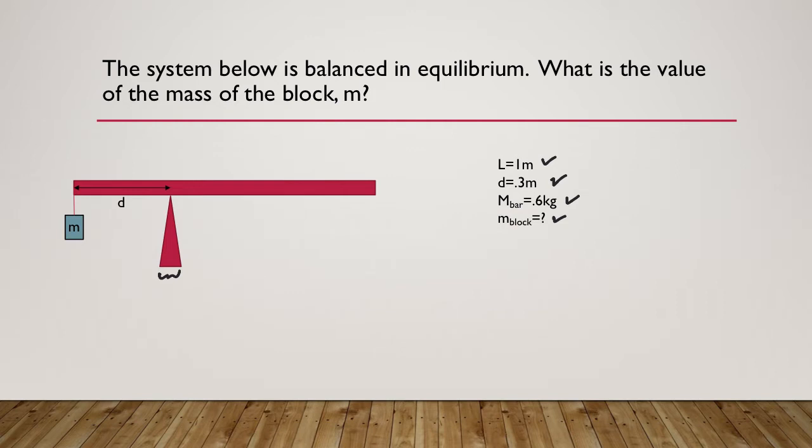Now you might say, well how can this even be balanced? There's no mass on the other side. Remember, first and foremost, that a bar has mass, and its mass acts at its center of mass. This is where we're really dealing with the real physicality of objects, so we don't ignore them unless it explicitly says to ignore them.